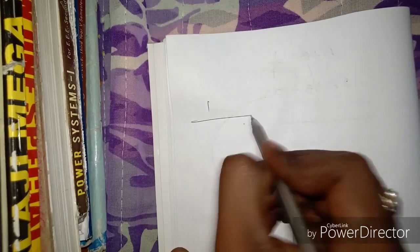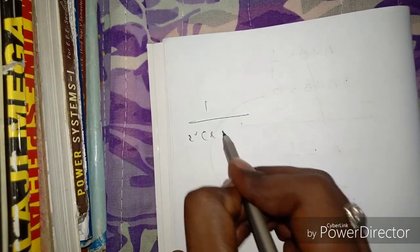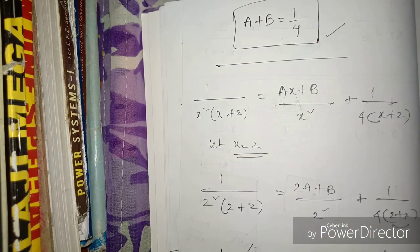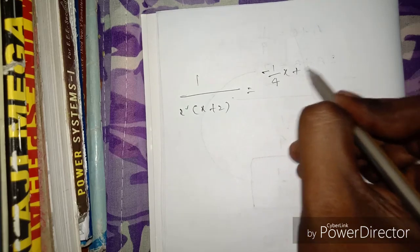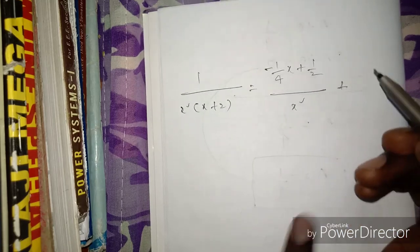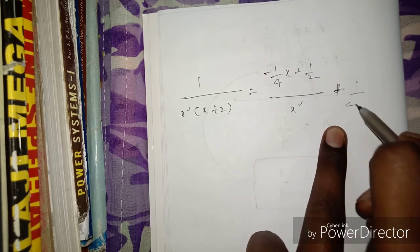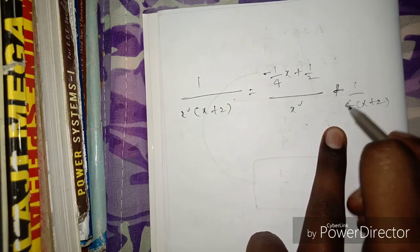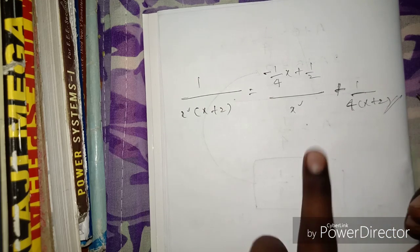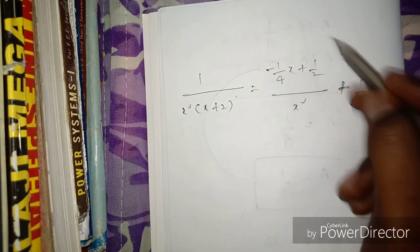Therefore, the final answer is: 1/(x²(x + 2)) = (-1/4 · x + 1/2)/x² + (1/4)/(x + 2). That is the complete partial fraction decomposition.